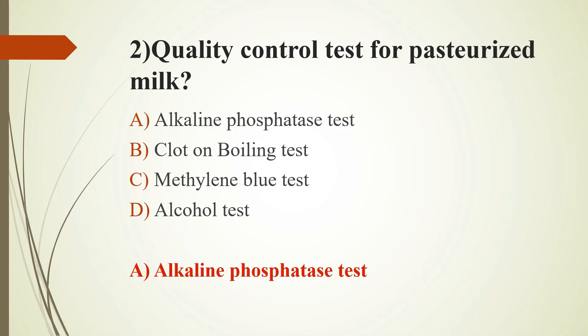Option D: Alcohol test is also a rapid platform test for milk. It is a quick and simple test, and it is positive in colostrum or mastitis milk. The test uses 68% alcohol mixed with milk in a ratio of 1 to 1. If it is good milk, there will be no coagulation.